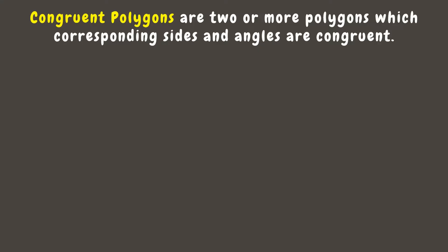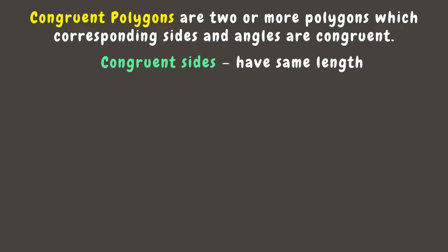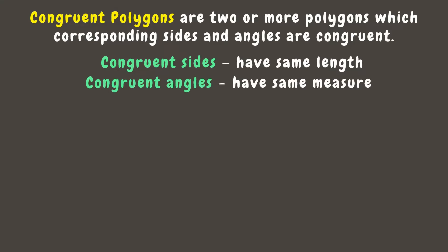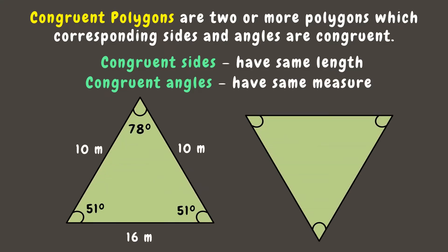Congruent polygons are two or more polygons whose corresponding sides and angles are congruent. We can say sides are congruent if they have the same length, while angles are congruent if they have the same measure. For example, we have here two triangles.